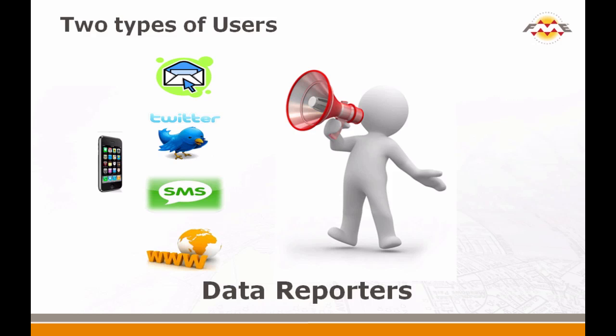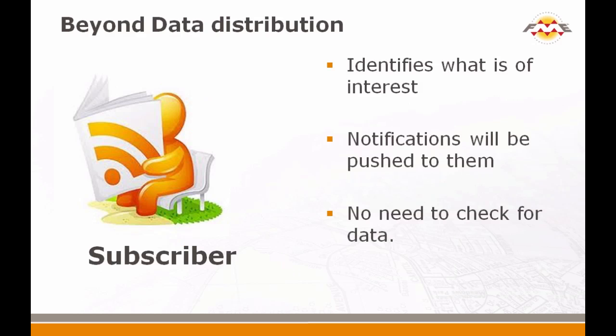Whenever an event happens and a user reports it, lots of things happen. The subscriber doesn't worry about anything other than getting notified when new data is available. He simply registers - says he's interested in this - and when it happens, he will be told. Notifications are pushed to him. He doesn't have to check for data. In the old model, when a user wanted the latest data he'd go to a website and ask for it. Now, in this new model, as soon as it happens, the user gets the most up-to-date data.